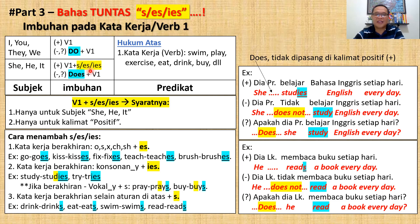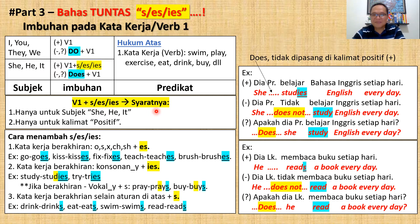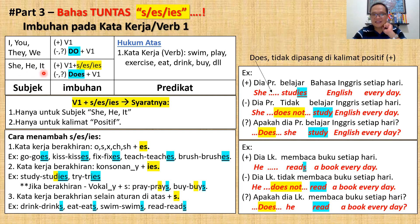Sekarang kita fokus di sini — warna kuning ini — yaitu ketika subjeknya she, he, atau it, kata kerjanya ditambah s, es, atau ies. Ada dua syarat. Syarat pertama: kata kerja wajib dalam Simple Present ditambah s, es, ies jika subjeknya she, he, atau it.